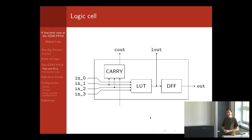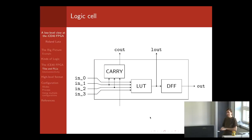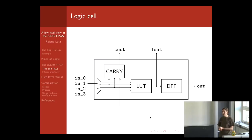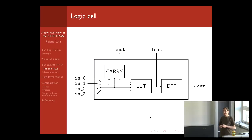Zooming into one logic cell, the four inputs are connected to a lookup table — a freely definable logical function of four binary inputs and one binary output. It contains 16 bits for the 16 possible configurations of the inputs. The output goes into a D-type flip-flop whose output is the output of the logic cell. There is also a carry unit that takes inputs one and two and the carry signal from the previous logic cell; if zero or one of these signals are high it outputs zero, and if two or three are high it outputs one — essentially a majority vote.